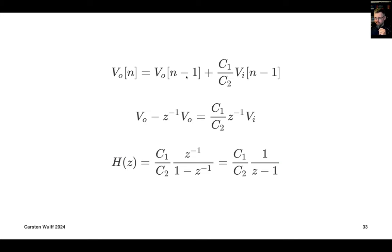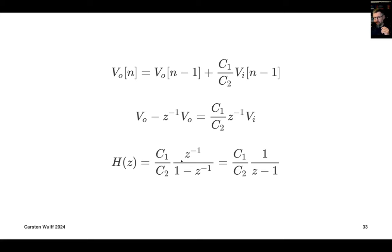Setting up the equations: the next output voltage equals the previous output plus C1/C2 times the input voltage. Translating from the sample domain into the Z domain — VO minus the Z⁻¹ version of VO equals C1/C2 times the Z⁻¹ version of VI — and working through the algebra gives the transfer function of a discrete time integrator.